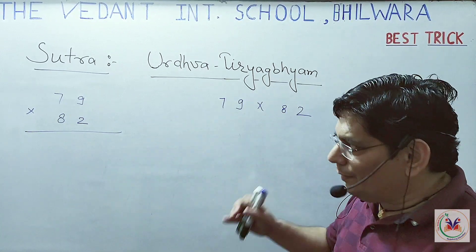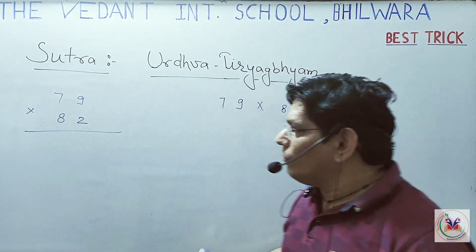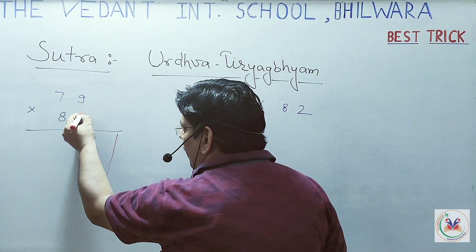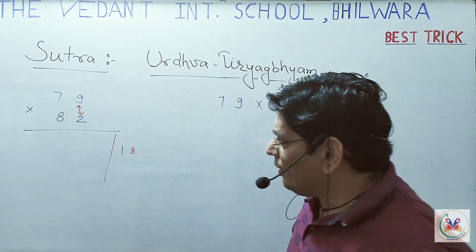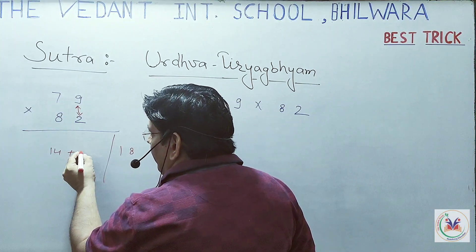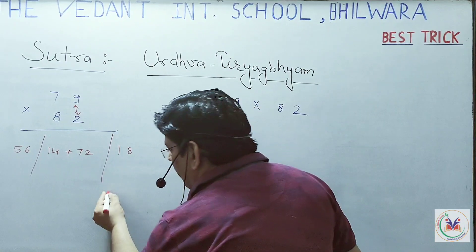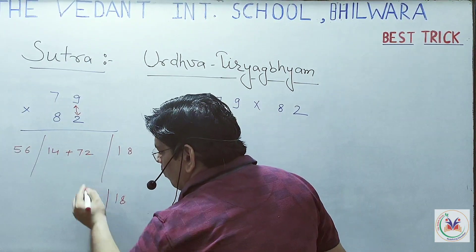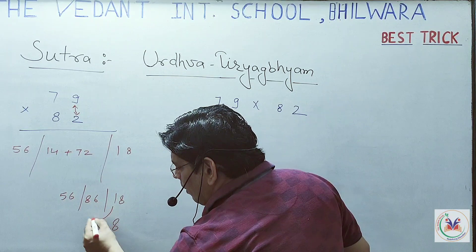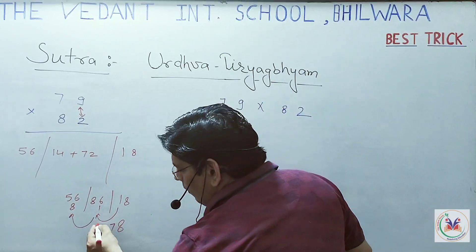Now I am giving you one more example — 79 multiplied by 82 — and we'll make the calculations faster, reducing steps. First: 9 into 2 is 18. Then cross multiply: 7 into 2 is 14, and 9 into 8 is 72. Add them: 14 plus 72 gives 86. Then 7 into 8 is 56. So we have 18, 86, and 56. Write 8, carry 1; 86 plus 1 is 87, write 7, carry 8; 56 plus 8 is 64.